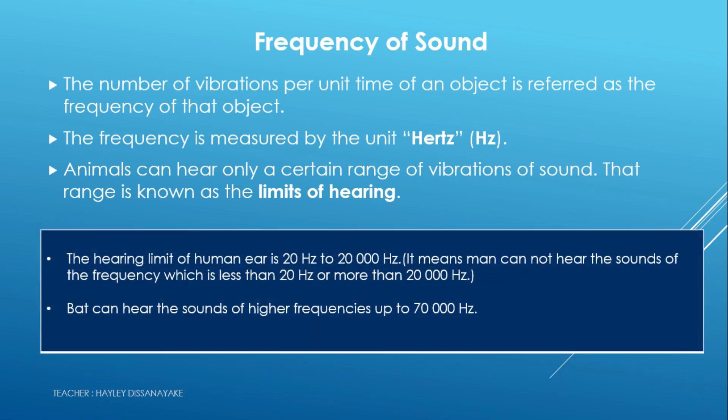Now we are moving to an important part of this lesson: the frequency of sound. The number of vibrations per unit time of an object is referred to as the frequency of that object. Frequency is measured in the unit hertz. For example, if a guitar string vibrates 50 times within one second, the frequency of that guitar string is 50 hertz.